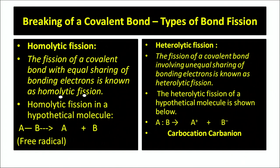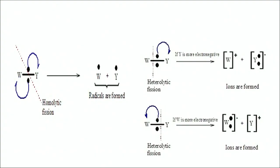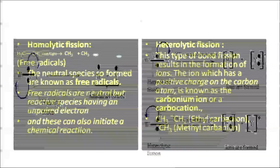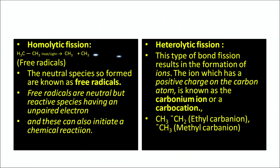Looking hypothetically at molecule A and B: in homolytic fission, A takes away the same number of electrons as B, so these radicals are called free radicals. Whereas in heterolytic fission, one atom occupies a negative charge called a carbanion, and the other atom occupies a positive charge called a carbocation. Homolytic fission results in the formation of free radicals, which are neutral species but highly reactive and act as initiators in a chemical reaction. In heterolytic fission, carbocation and carbanion are formed.